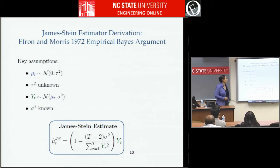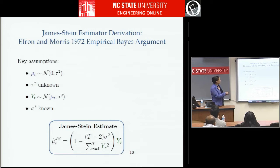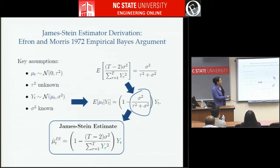In the 70s, Efron and Morris came up with an empirical Bayes argument that sheds a lot of light on what's going on. They said: assume each mean is drawn from a Gaussian with zero mean and some unknown variance — a hierarchical Bayes model. A priori, our means came from some distribution, and then each sample comes from those individual Gaussians. The individual Gaussians are still independent, but the means are coming from the same distribution. Given this model, the expectation for the mean given the sample is the shrinkage of that sample — and plugging in the data estimate gives you the James-Stein estimate.